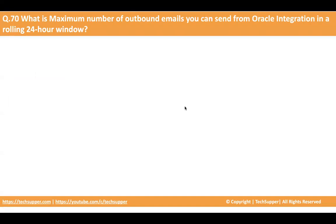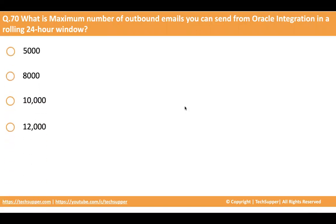The next question is: what is the maximum number of outbound emails you can send from Oracle Integration in a rolling 24-hour window? You can use the notification action to send emails, but how many emails can you send in a 24-hour window? The options are 5000, 8000, 10,000, and 12,000. The answer is 10,000. You can also see this from your dashboard, which shows the number of emails sent per day — and every day you can send 10,000.